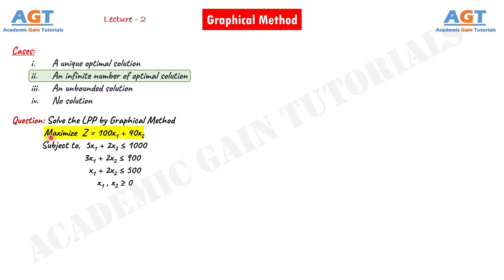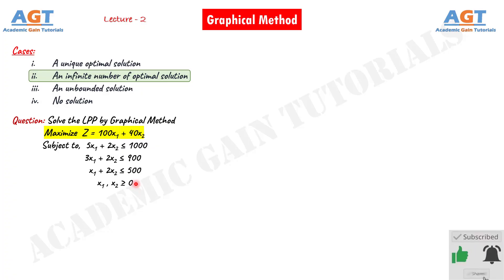We are asked to solve this linear programming problem using the graphical method. It is given that maximize z equals to 100x1 plus 40x2, subject to three given inequality equations where there are two variables in each of them, and at last it is said that x1 and x2 are greater than or equal to zero. Let's solve this problem now.